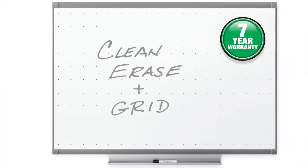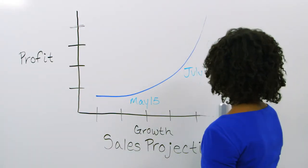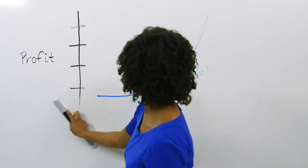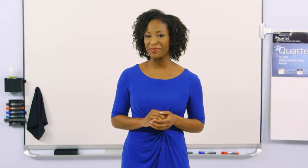Quartet's Total Erase boards offer the erasability of higher-priced commercial boards at a more affordable price and come with a seven-year warranty. A Total Erase coating and subtle grid pattern is applied to a melamine surface, making this board resistant to staining, ghosting, and denting.